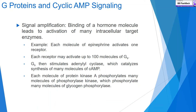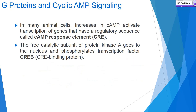Binding of a single hormone molecule leads to activation of many intracellular target enzymes. For example, each molecule of epinephrine activates one receptor, which may activate up to 100 molecules of G-proteins; these stimulate adenylyl cyclase, which catalyzes synthesis of many molecules of cAMP, activating phosphorylase kinase, which phosphorylates many molecules of glycogen phosphorylase.